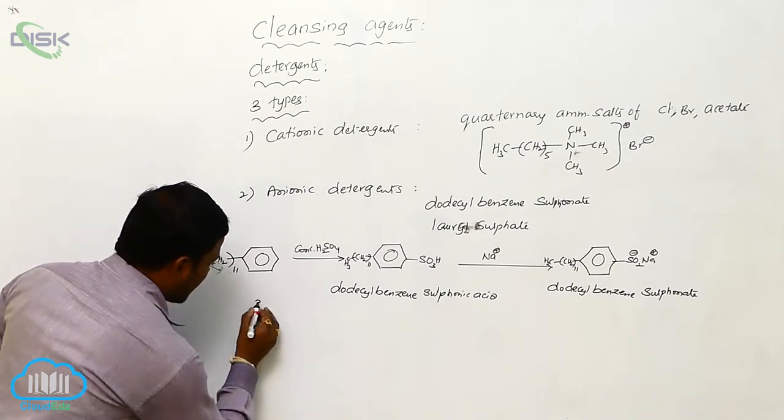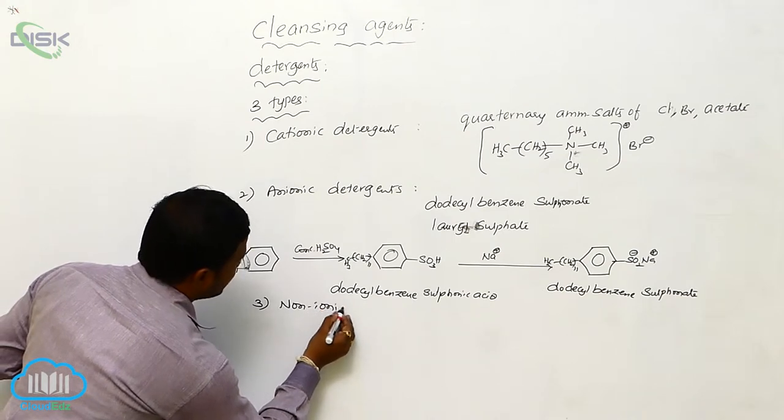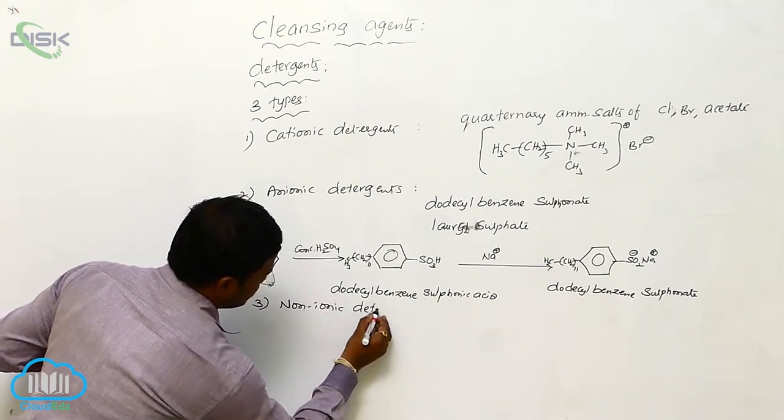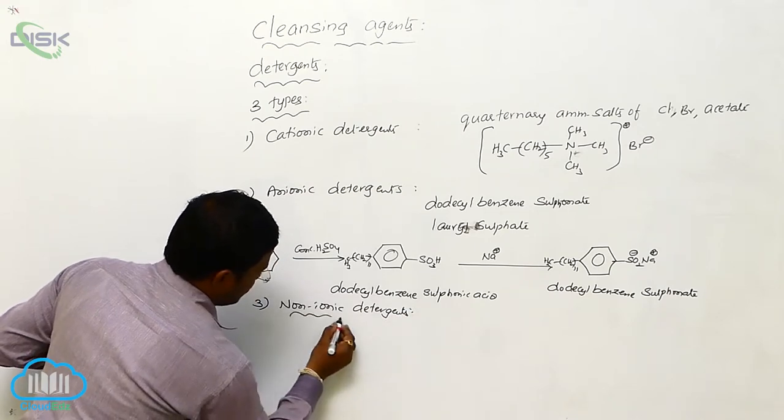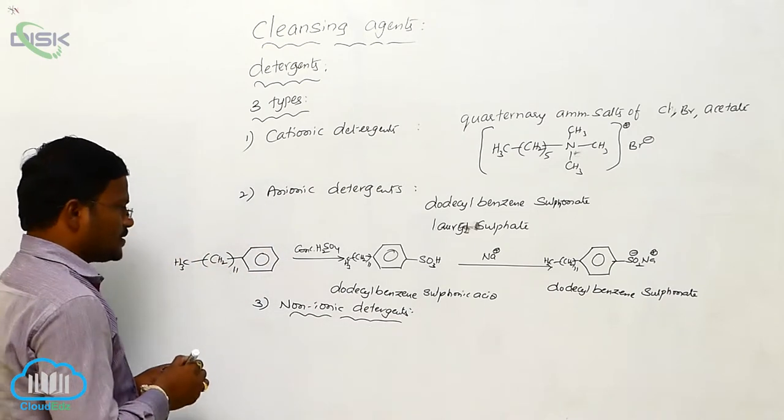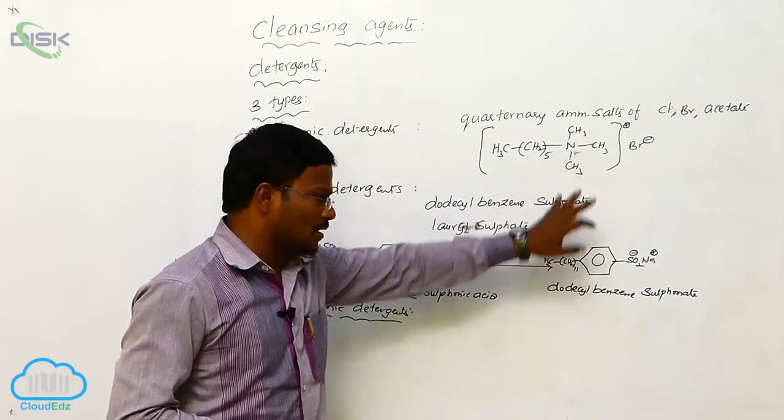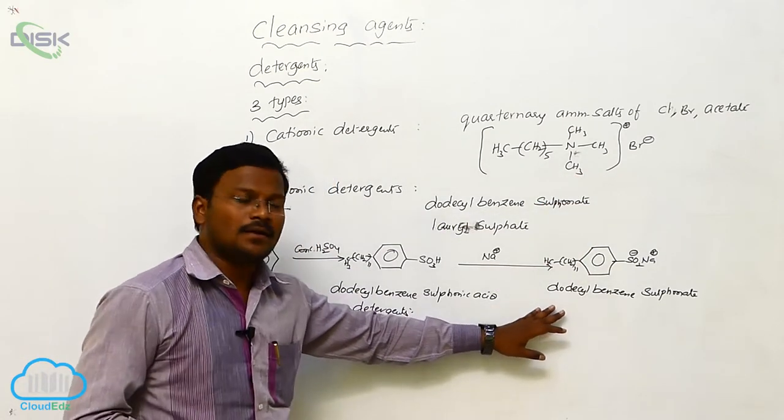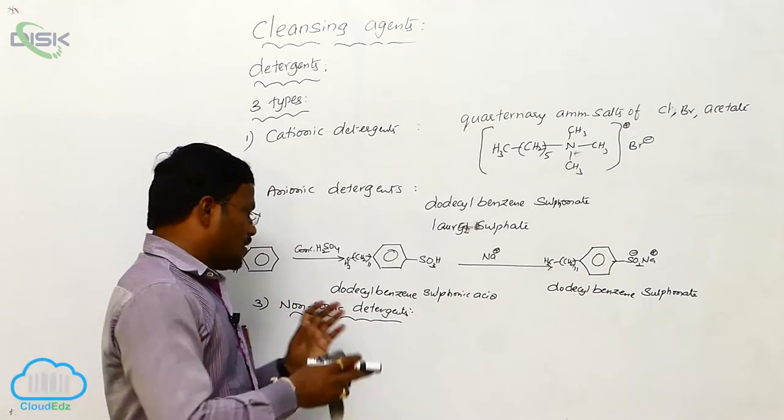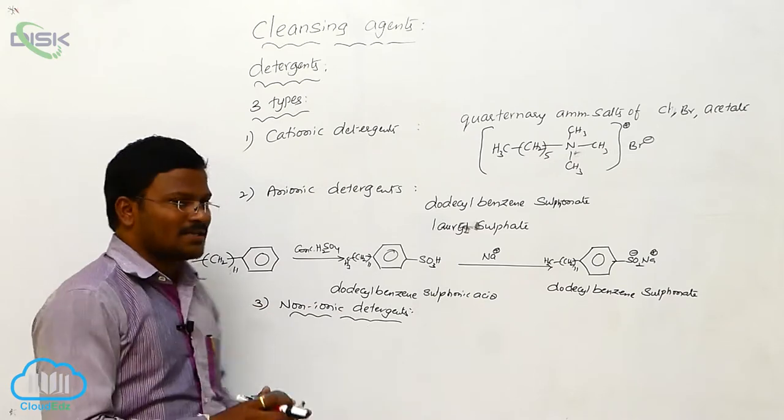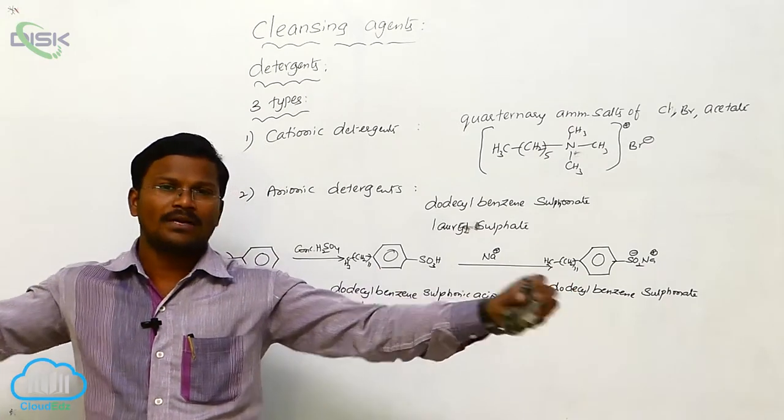Similarly, come to non-ionic detergents. What are non-ionic detergents? These detergents, neither with cationic character nor with anionic character, that means they are seems to be neutral. These non-ionic detergents are a chemical composition which consists of a long hydrocarbon chain.